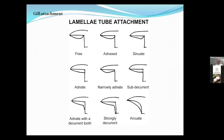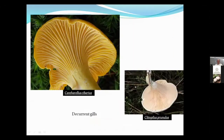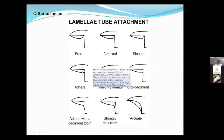The next feature is gill attachment — how do the gills, or lamellae in Latin, attach to the stem? If they're simply attached to the stem, that's called adnate or attached. Sometimes the gills come right up to the cap and leave a small gap — those are called free gills. Or the gills may run down the stalk, or have a little notch at the top.